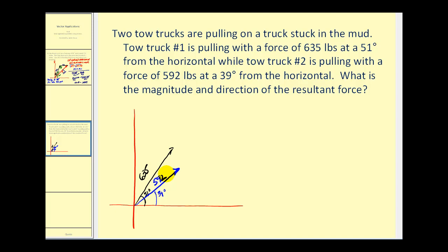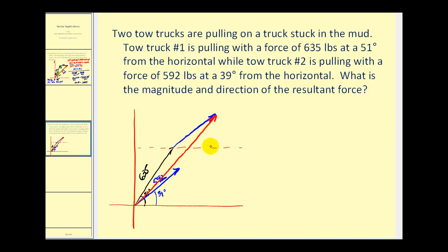We'll use the triangular method. I'll sketch a horizontal line parallel to the x-axis that passes through the terminal point of the first vector, then move the initial point of the blue vector up to the terminal point of the black vector. The resultant vector has its initial point at the origin and its terminal point at the terminal point of the blue vector, forming a triangle with a very large obtuse angle. If we know this angle is 39 degrees, and the two blue vectors are parallel with the horizontal lines also parallel, then the angle between the dashed red line and the blue vector is also 39 degrees.